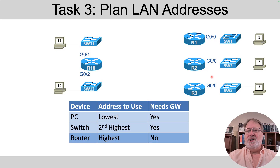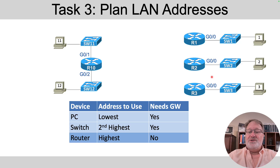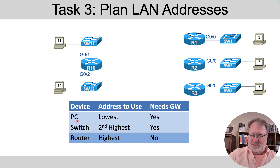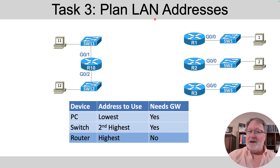Next, plan specific addresses from within those subnets. You'll do a math exercise to find all the addresses in those subnets. For each LAN subnet — for example the subnet with PC 11, Switch 11, and Router R10's top interface — pick the numerically lowest IP address for the PC, the highest address for the router interface, and the second highest address for the switch. That's the addressing pattern to use in each LAN.